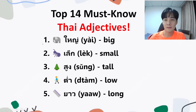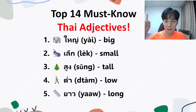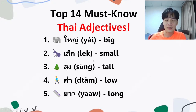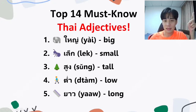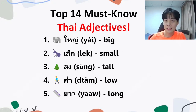The first vocabulary: number 1, ใหญ่ — big. ใหญ่, low tone. Number 2, เล็ก — small. This is high tone, เล็ก. So ใหญ่ is big and เล็ก is small.